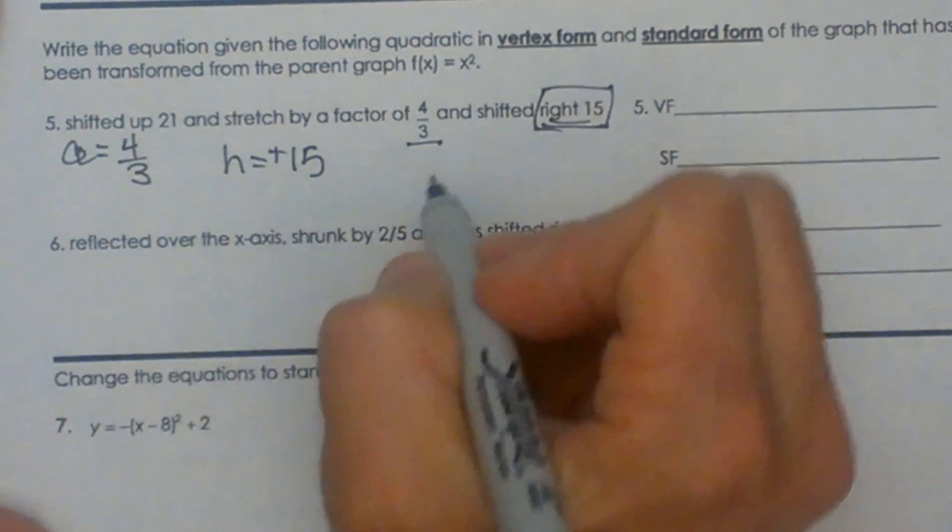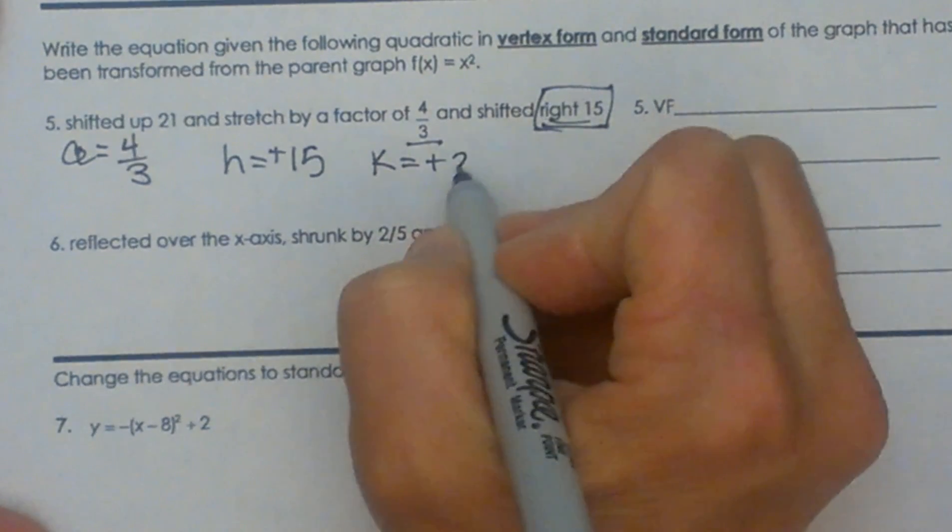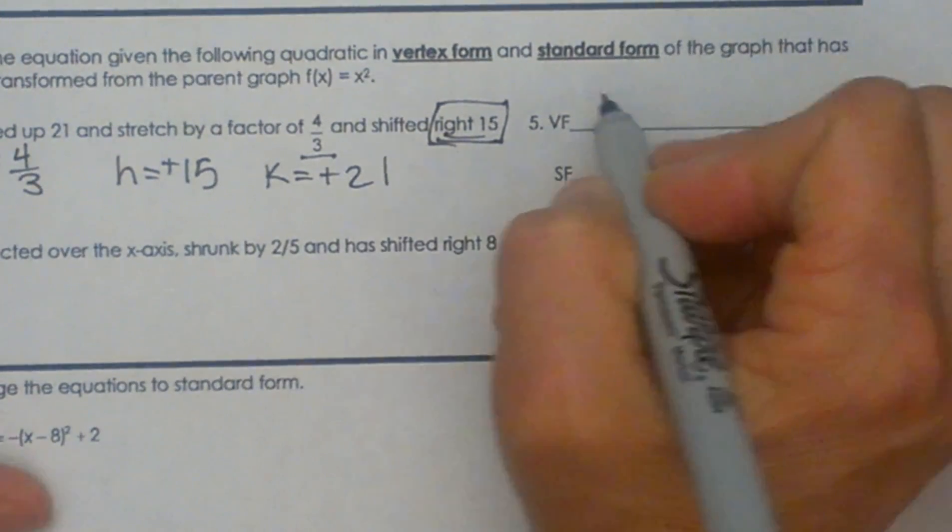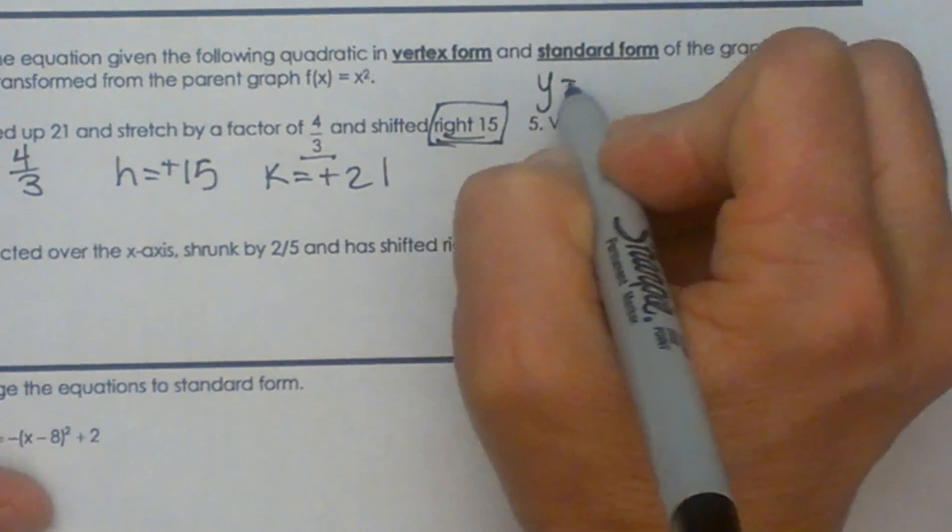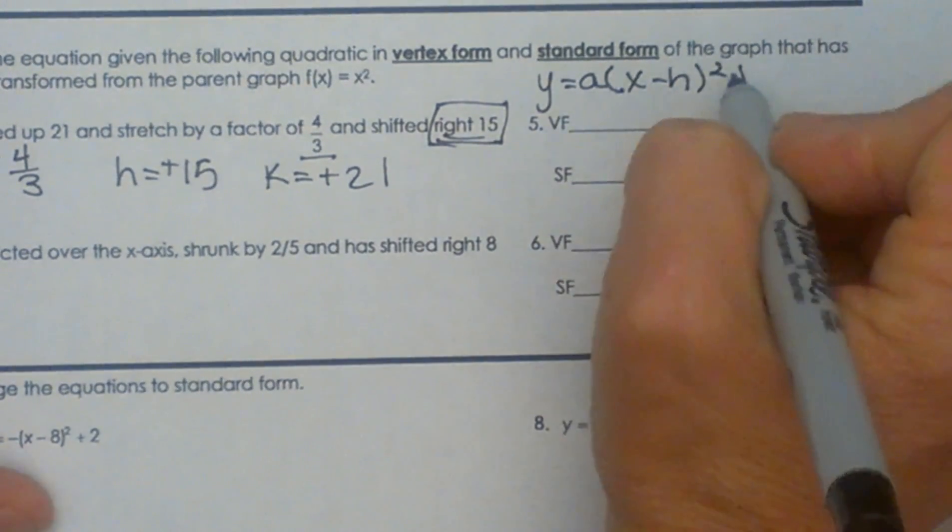And then k is our vertical shift up or down, and we have an up 21, so it's a positive 21. Now all we have to do for vertex form is plug it into the vertex equation, which is y equals a times x minus h quantity squared plus k.